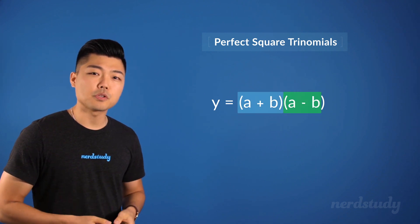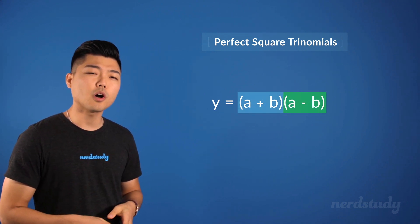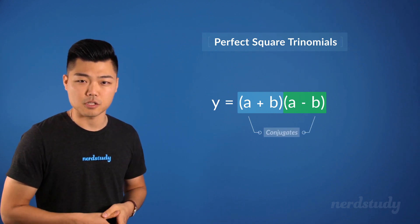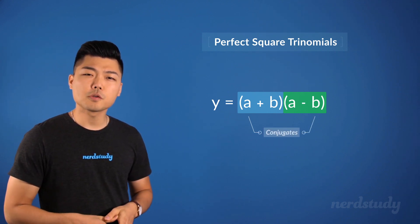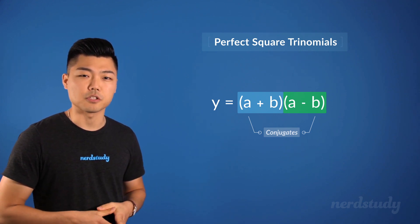Now, when the binomials are the same with just a plus minus difference, we call these two conjugates of each other. So, let's try some examples of conjugates and see what they simplify to.